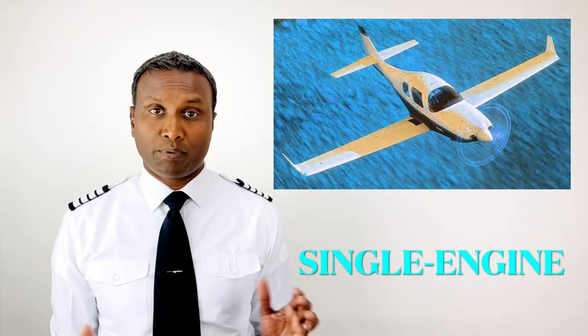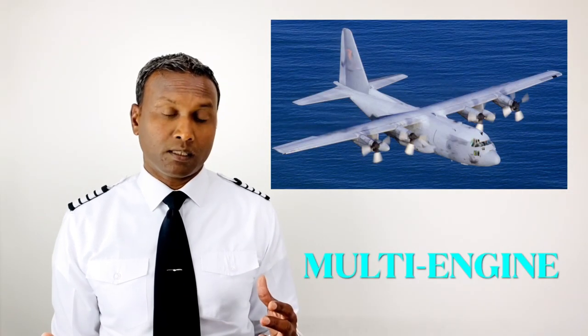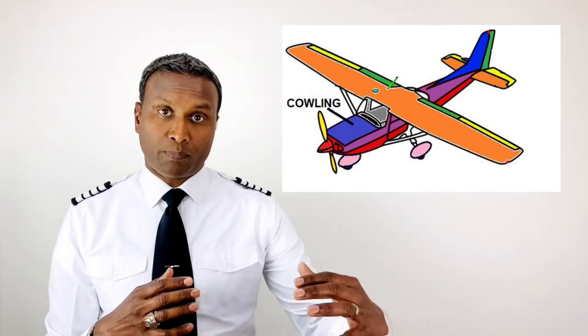An aircraft can have one or more than one engine. An aircraft with one engine is simply called a single-engine aircraft, and an aircraft with more than one engine is called a multi-engine aircraft. The engine, depending on the design of the aircraft, can be positioned or mounted in many different ways. In this example, the engine is positioned inside a structure called the cowling, in the forward part of the fuselage. It can also be mounted to the wings or even the sides or the top of the fuselage. Engines, much like the engine of a car, produce the power needed to move the aircraft.